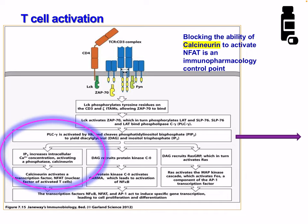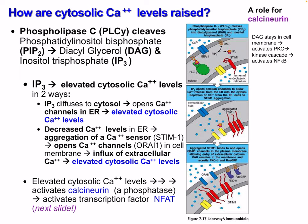Knowing all this detail allows us to have different interventions that can block certain aspects. For example, we can have medications that block calcineurin's ability to activate NFAT — this is an immunopharmacological control point.